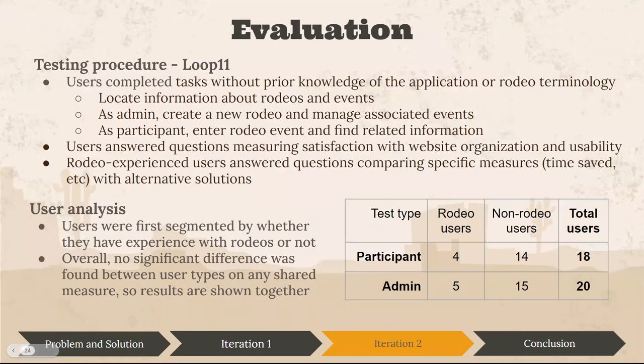Our testing procedure for this iteration was very similar to our first iteration and we used Loop 11 again. We did not give users any context on the application or on rodeos. The main difference is that they were asked to complete much more — the test covered all of the primary tasks involved in participant and admin application. They answered questions about their experience, and rodeo-savvy users benchmarked this with their past experiences. We originally segmented users by whether they had experience with rodeos, but no significant difference was found on any shared measure, so we're showing them all together.